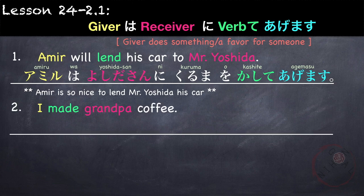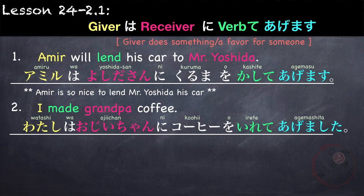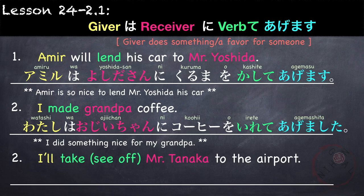Another example: I made coffee for grandpa. The giver is me and the receiver is grandpa. Watashi wa, ojii-chan ni, kouhi wo — using the verb to make in te-form — and adding agemasu. This means I did something nice for my grandpa.